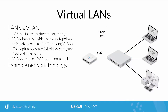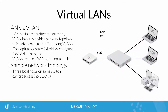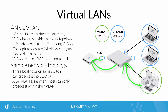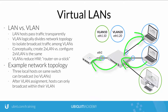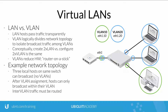In this example, three hosts connected to the same switch can reach each other via broadcast. However, once assigned to a VLAN, hosts can only broadcast to other hosts in that same VLAN. Inter-VLAN traffic, therefore, requires a router or a Layer 3 switch capable of moving packets between networks.